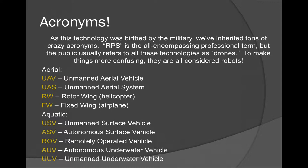The military absolutely loves acronyms. We have UAV — Unmanned Aerial Vehicle — and UAS — Unmanned Aerial System. There are differing opinions on what things should be called. For aerial systems: RW is rotor wing, which is helicopters; fixed wing is your airplane type. For aquatic ones: USV is Unmanned Surface Vehicle, which is what the boat in back would be; ASV is Autonomous Surface Vehicle, able to pilot itself; ROV is Remotely Operated Vehicle; AUV is Autonomous Underwater Vehicle; and UUV is Unmanned Underwater Vehicle. For this class, we use the overarching acronym RPS — Remotely Piloted Systems — which encompasses everything quite nicely.